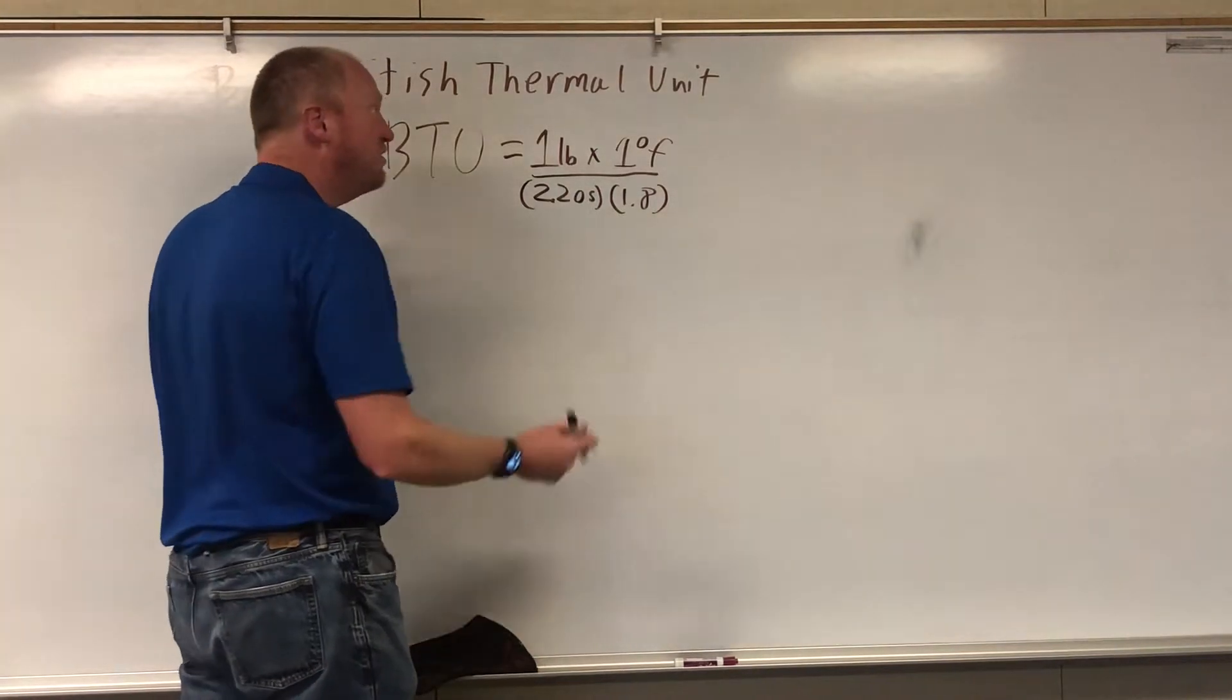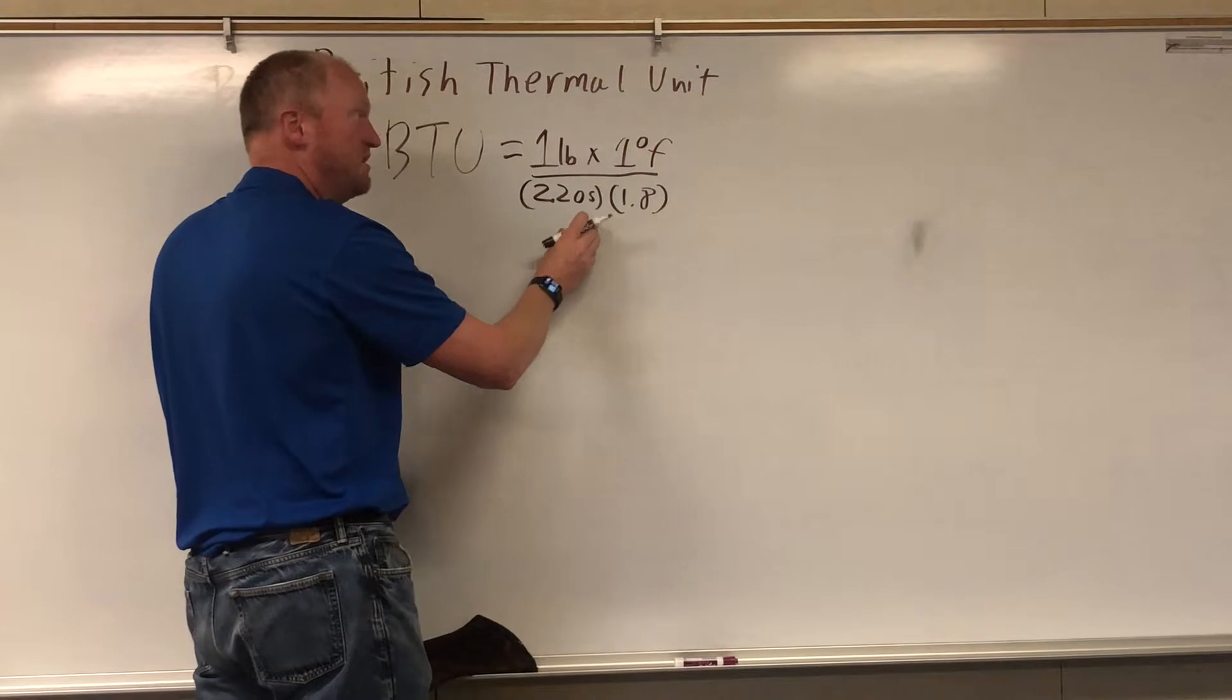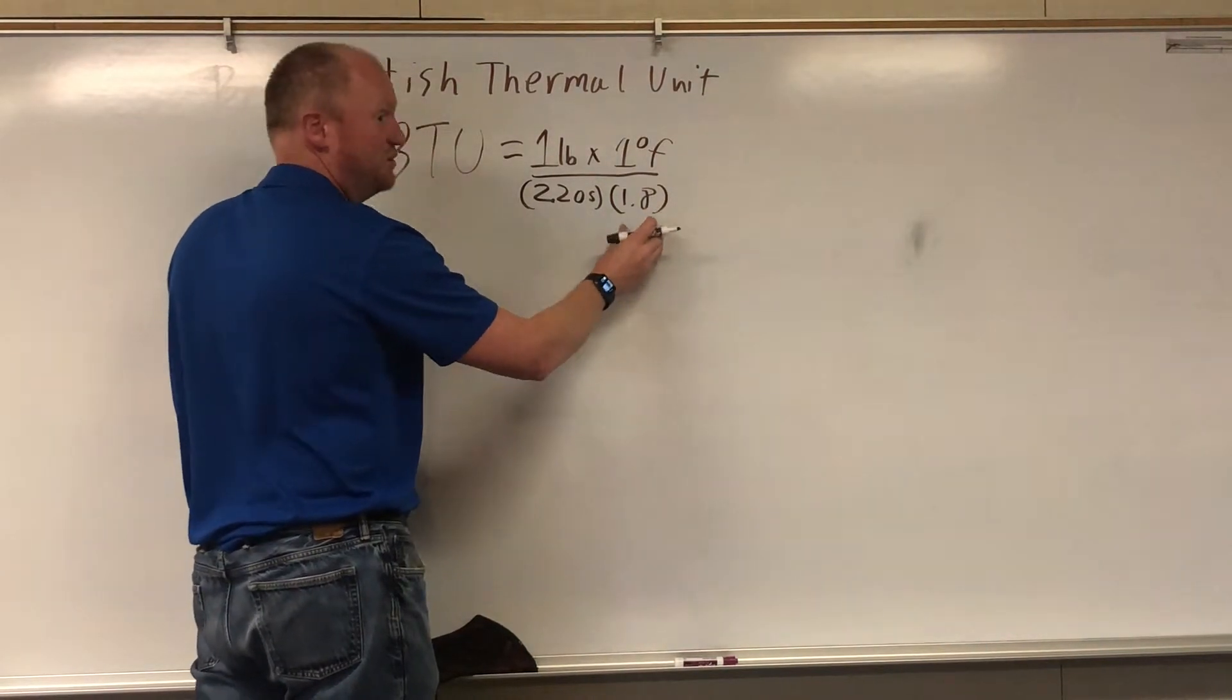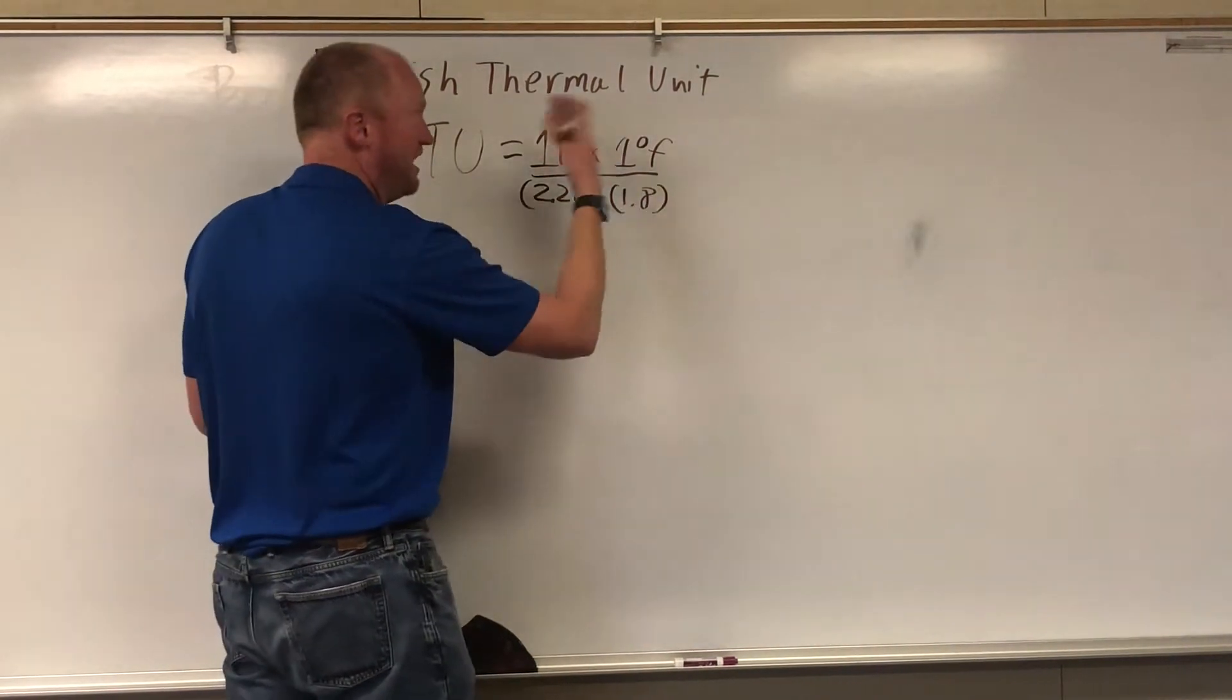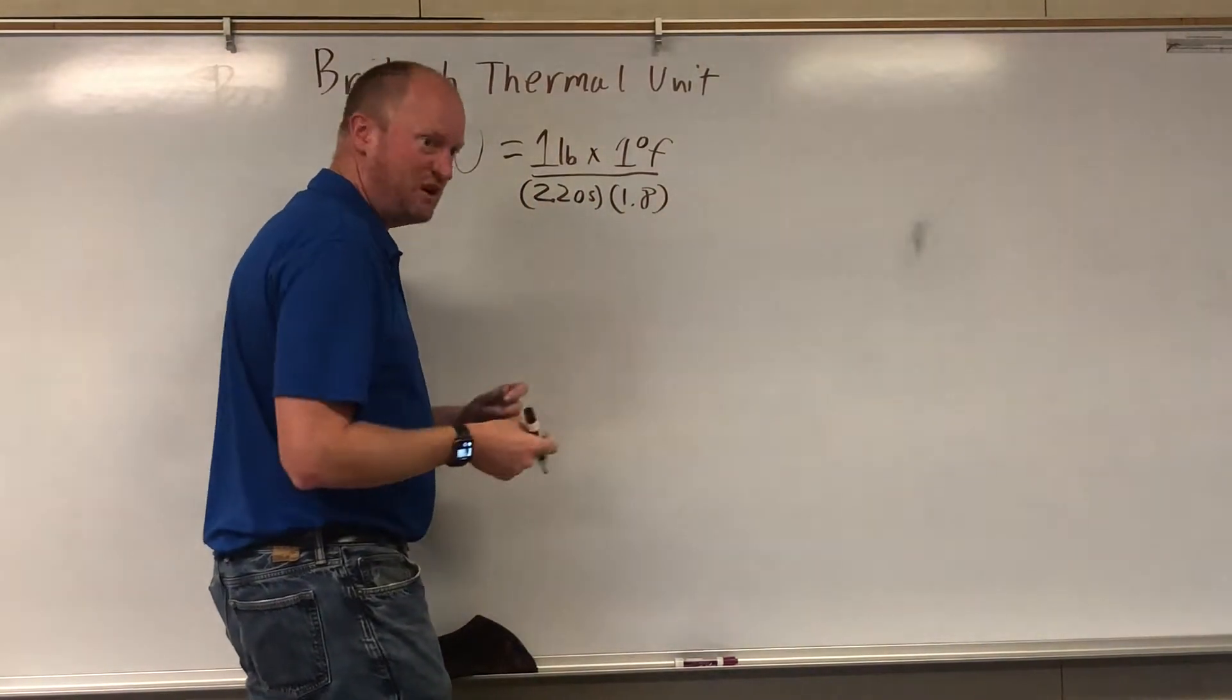By the way, if you're doing this on the calculator, either do it in two steps - divide by this, press equals, then divide by that, press equals - or multiply these two together and then divide by the product of the two. A lot of people screw that up, so just watch with that.